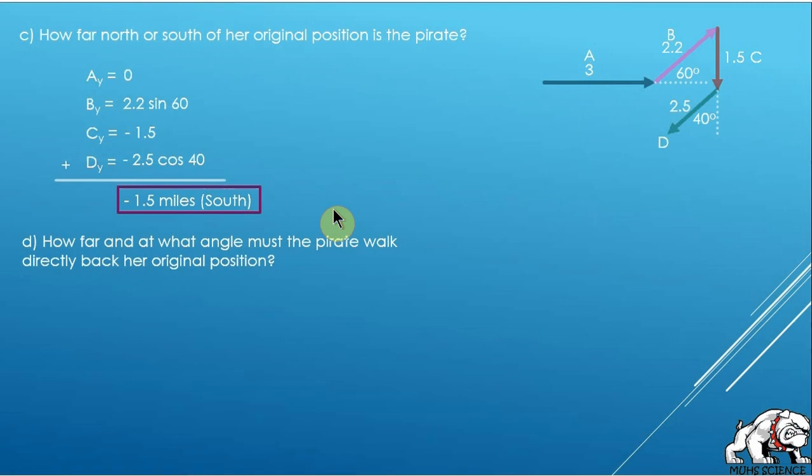All right, so we know how far east and west she is. Then the last question is how far and at what angle must the pirate walk directly back to her original position? Now normally when you're dealing with vectors you're interested in the resultant from start to finish, but in this question the pirate is reversing directions on you.